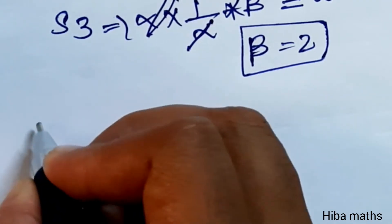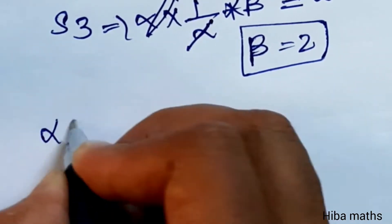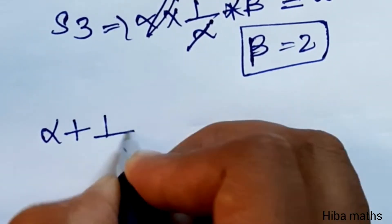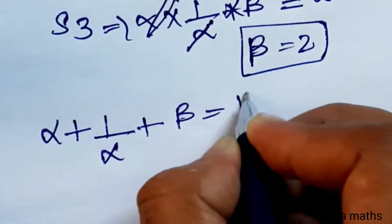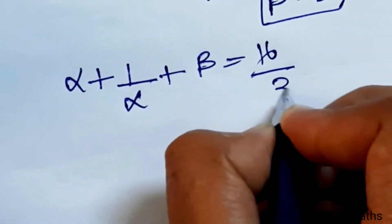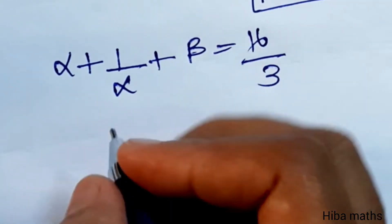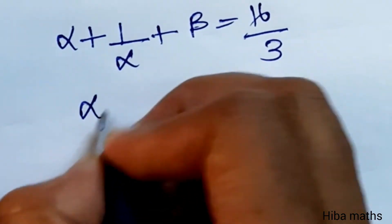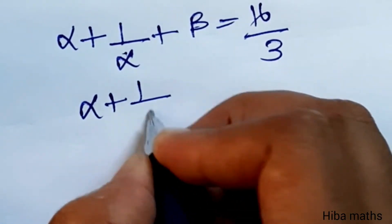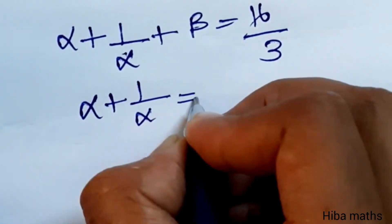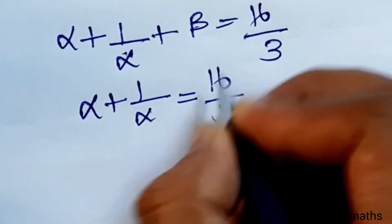Now substituting back into S1: α + 1/α + β = 16/3. Since β = 2, we get α + 1/α + 2 = 16/3, which gives α + 1/α = 16/3 - 2.